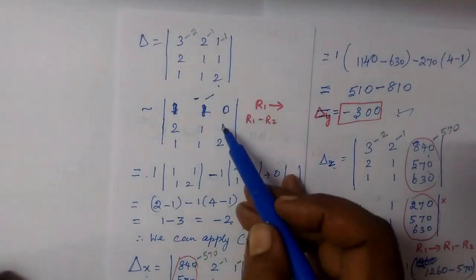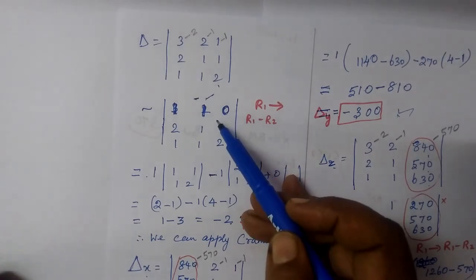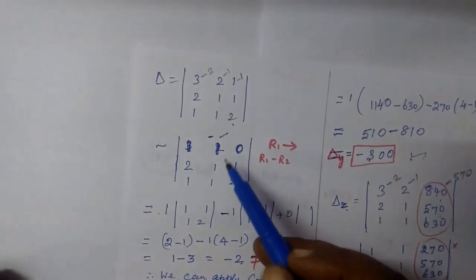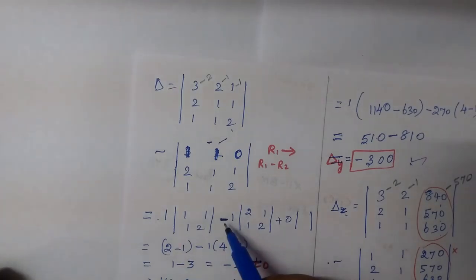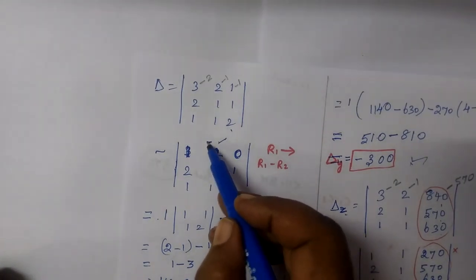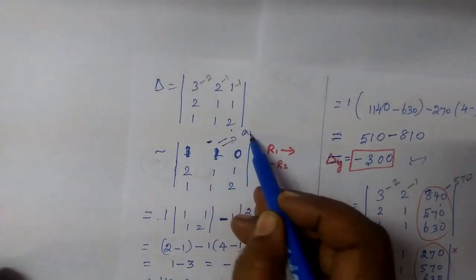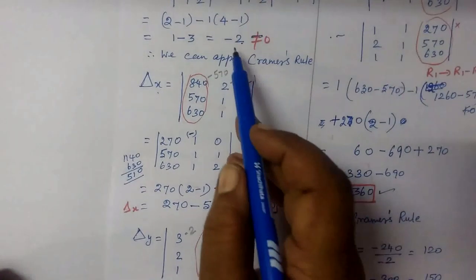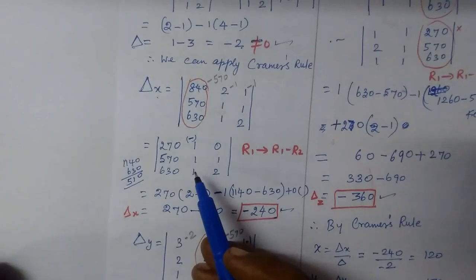You can get the value using the determinant. Now, we are going to get the result. Delta is equal to minus 2.